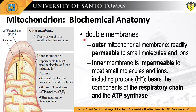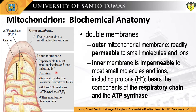Before diving into the electron transport chain and oxidative phosphorylation, it is important to revisit the mitochondria — the double-membrane organelle where the electron transport chain is housed and which is responsible for energy production, earning it the title of powerhouse of the cell. The outer mitochondrial membrane is readily permeable to small molecules and ions, which move freely through transmembrane channels formed by integral membrane proteins called porins. The inner membrane, however, is impermeable to most small molecules and ions, including protons. It bears the components of the respiratory chain and the ATP synthase.